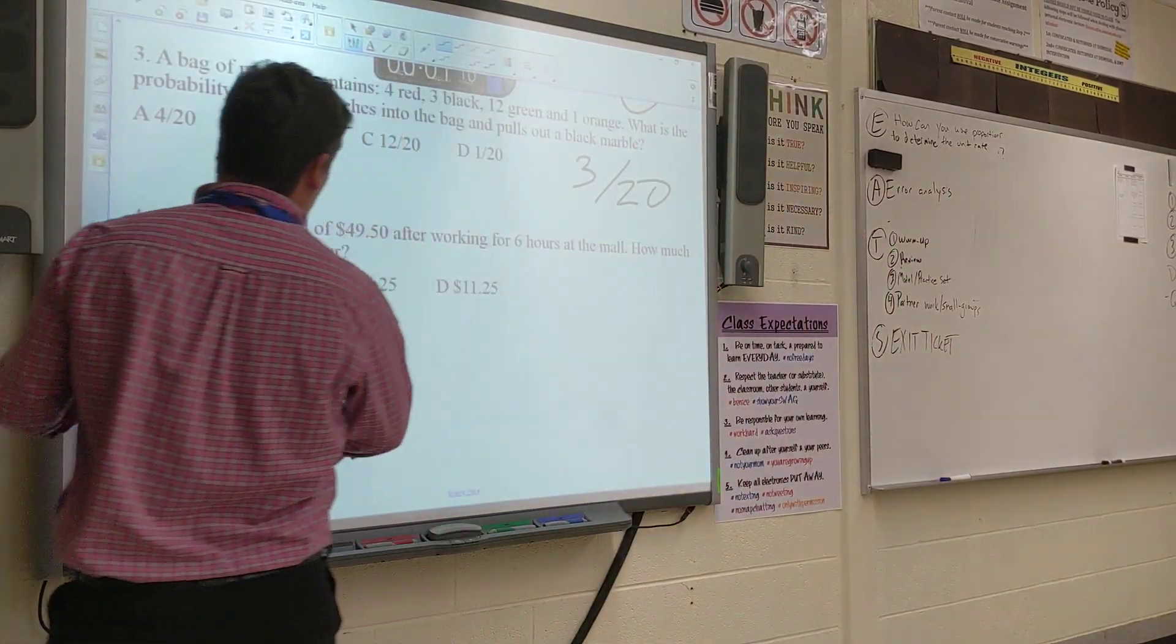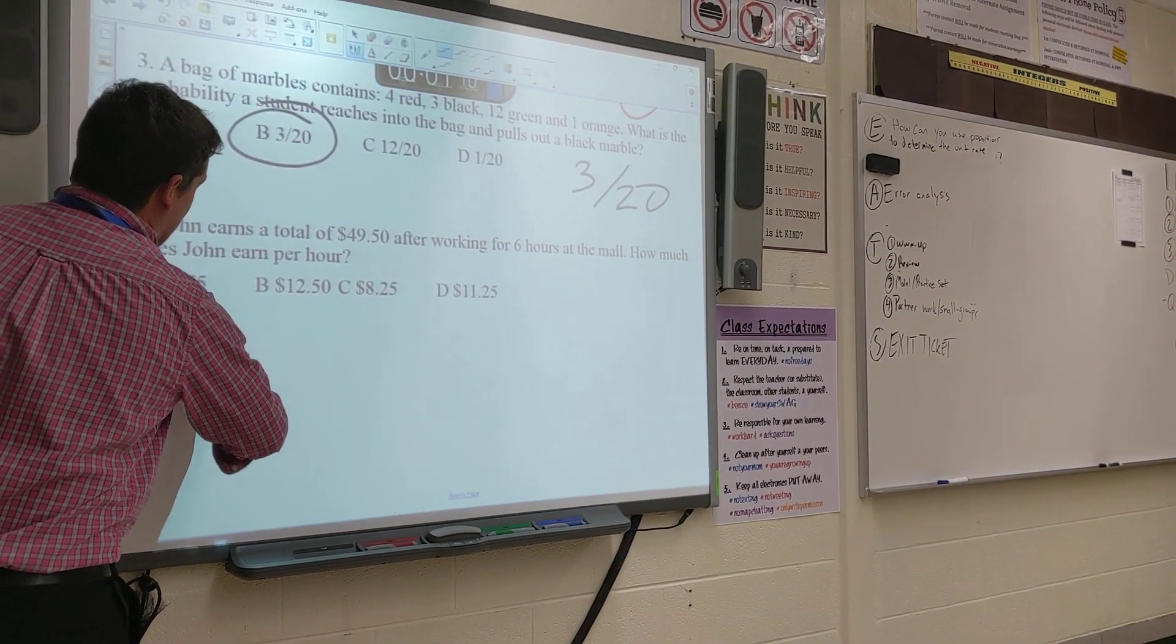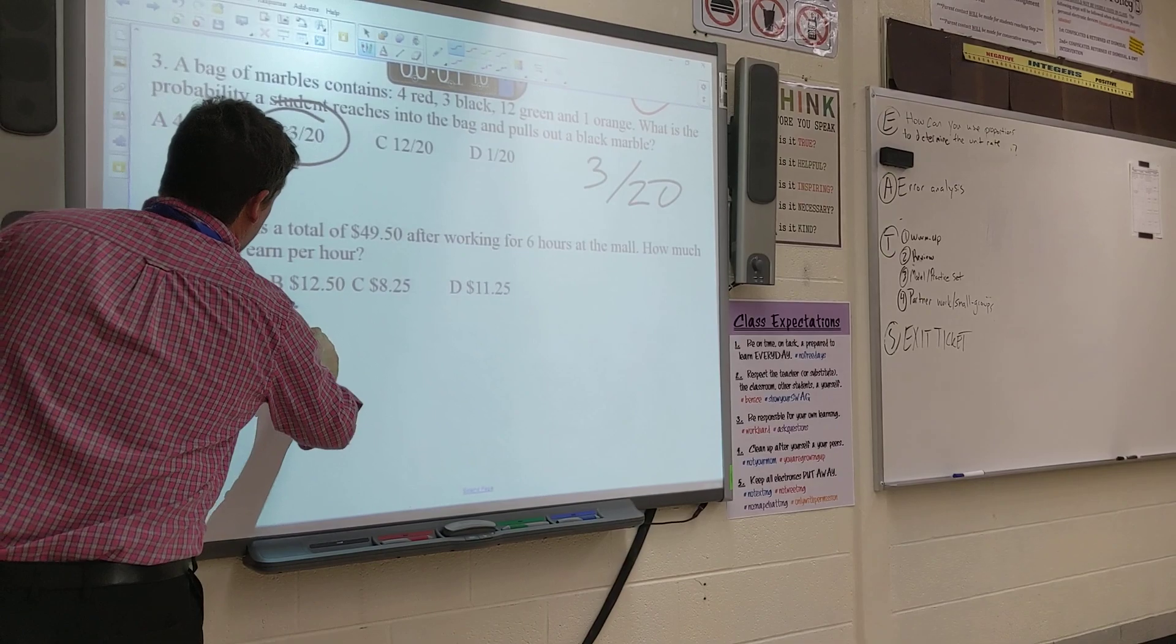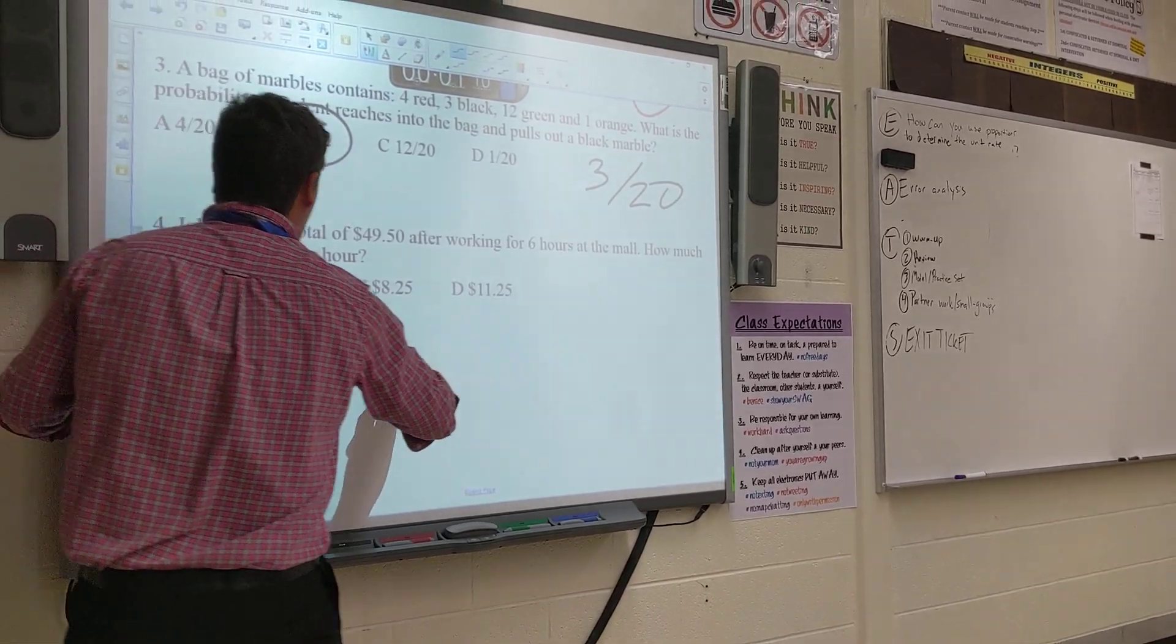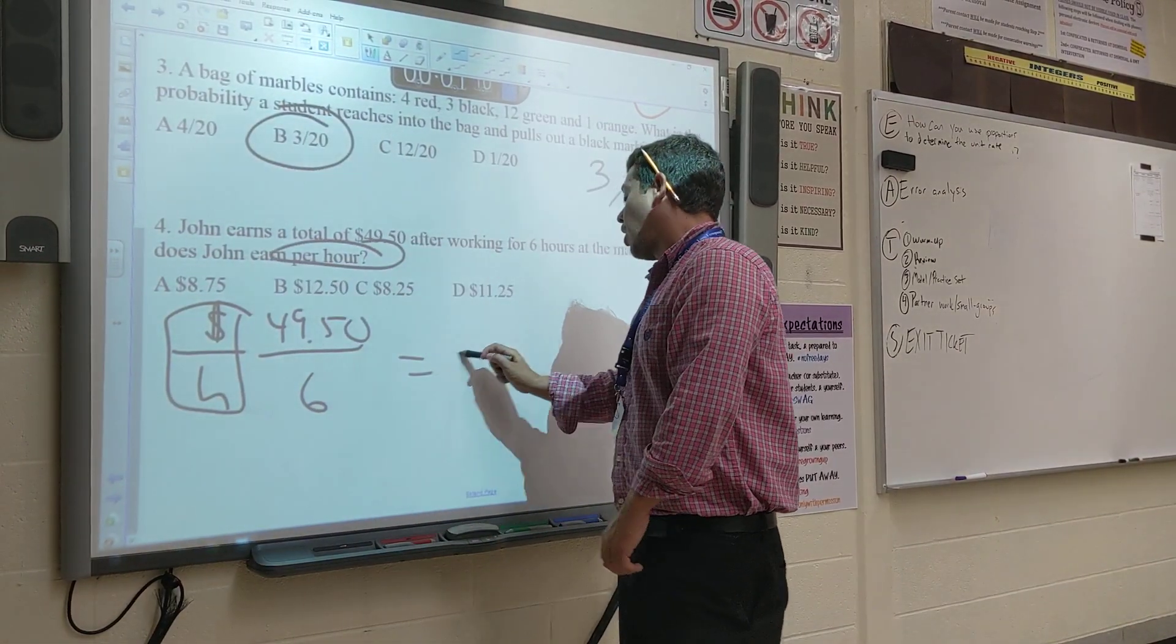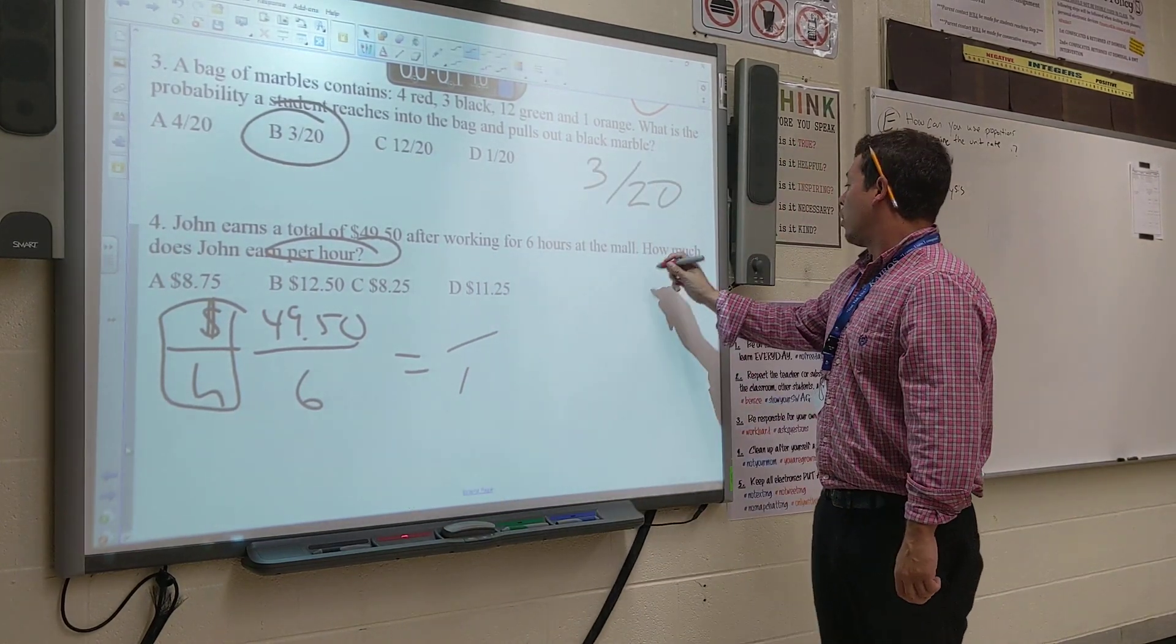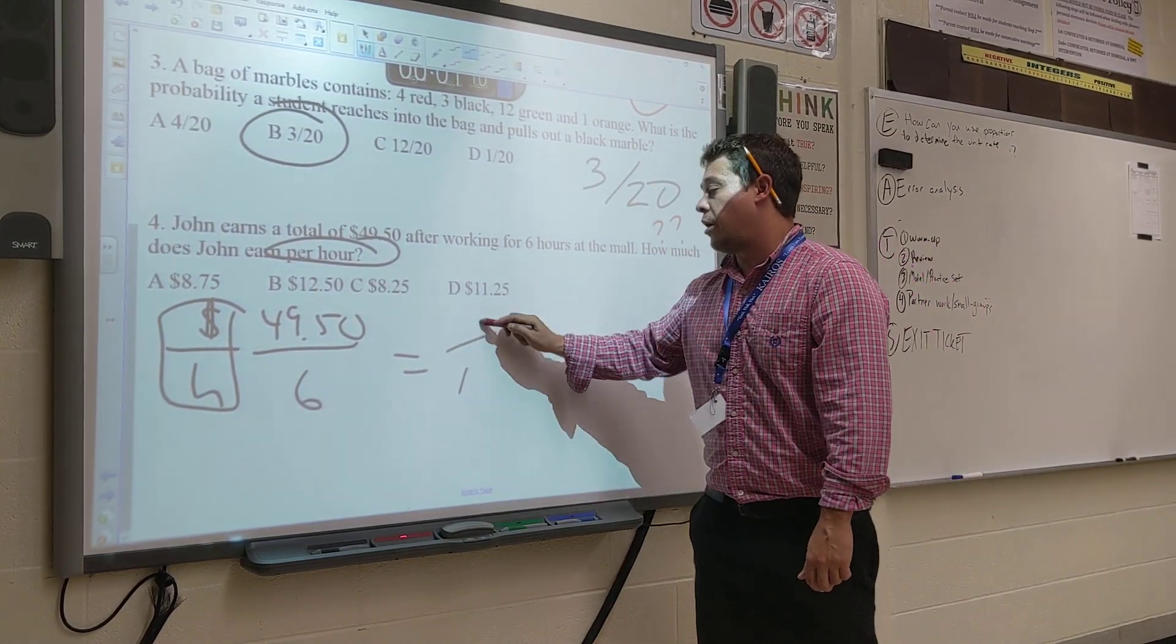John earns a total of $49.50 after working for 6 hours. Money. Hours. What we know, $49.50 for 6 hours. We want to know how much per hour. Per hour is 1 hour. If you weren't sure how much, we don't know.